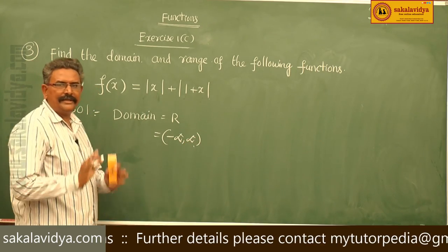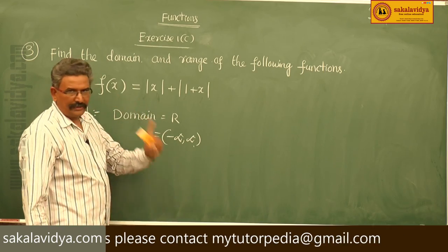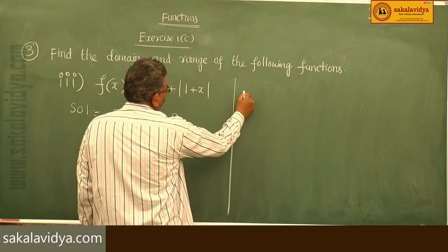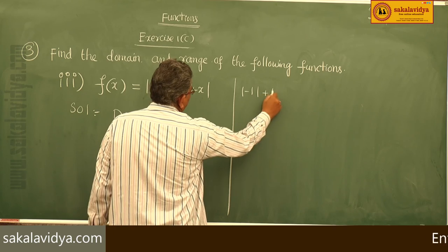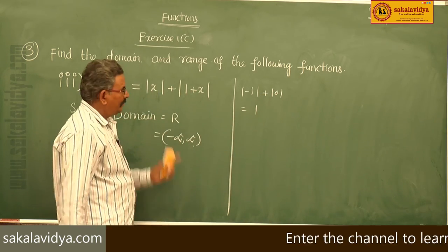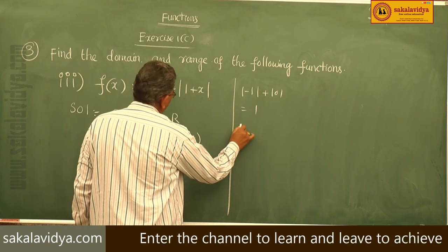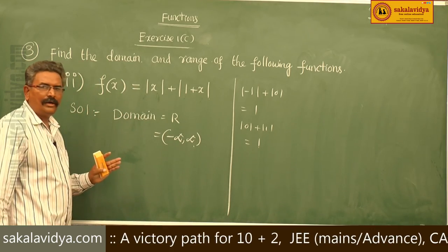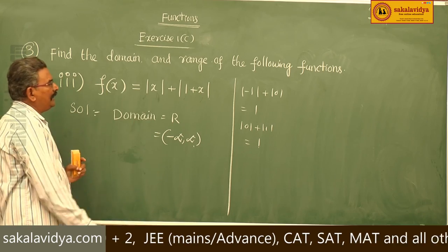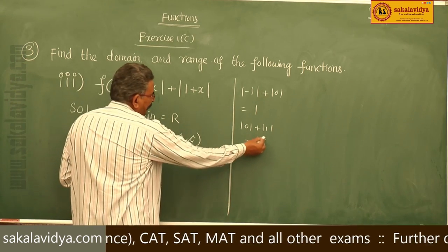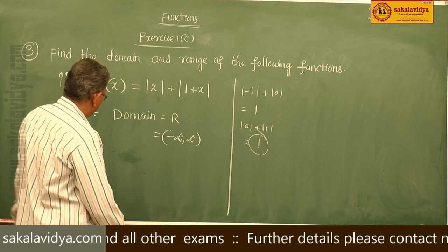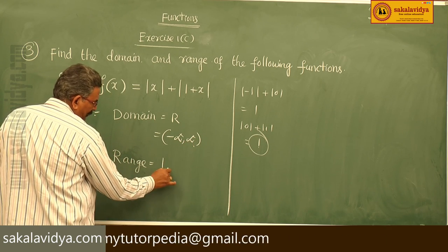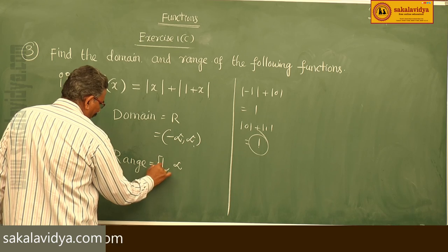Now let us find its range. If you put x = −1: |−1| + |1 + (−1)| = 1 + 0 = 1. If x = 0: |0| + |1| = 1. For any value of x, the output is always greater than or equal to 1. Therefore, the range is [1, ∞).